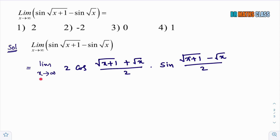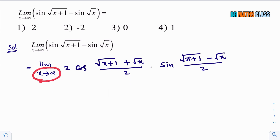Here, one point you need to know. x approaches to infinity means x value is not infinity — x value is very, very nearer to infinity, but not infinity. You know that x approaches to 2 means x value is slightly less than 2 or slightly greater than 2, but not 2. Similarly here, x approaches to infinity means x value is very, very nearer to infinity, but not infinity.